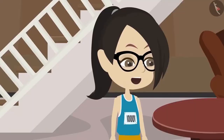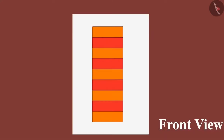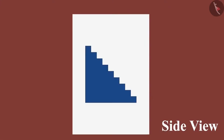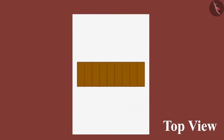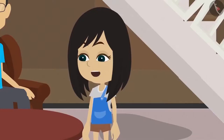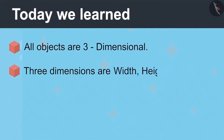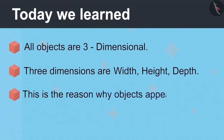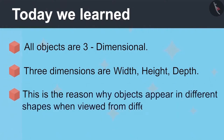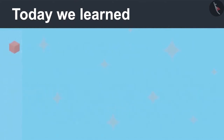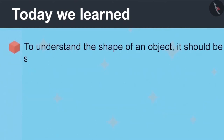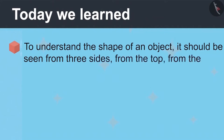Yes, this is a colorful rectangle. So did you understand? This is the front view of the staircase, this is the side view and this is the top view. Now I have fully understood that all objects are three-dimensional. The three dimensions are width, height and depth. Because of this, objects appear to be of different shapes when viewed from different sides. To understand the exact shape of an object, one must look at it from three sides: from the top, front and from the right side.